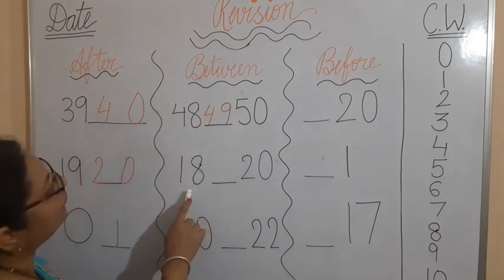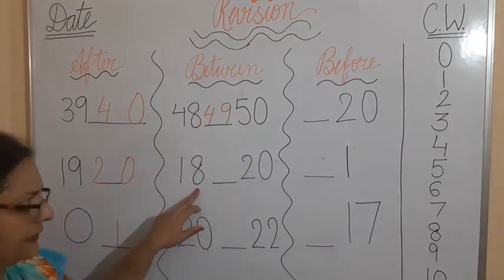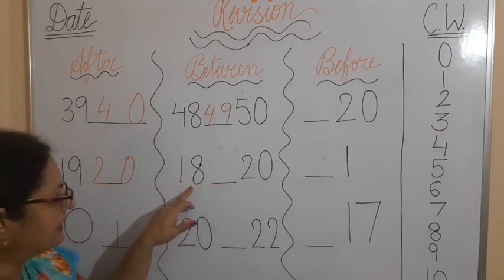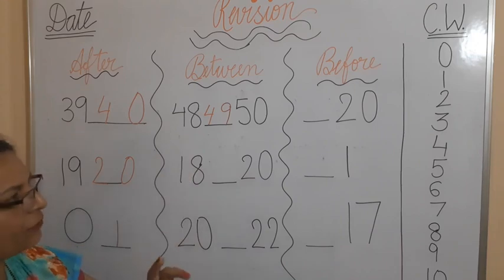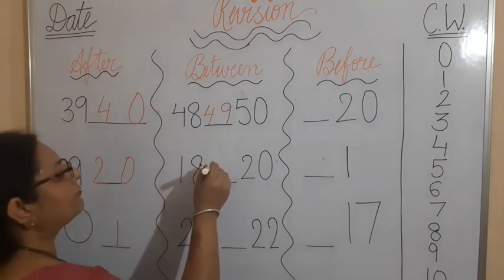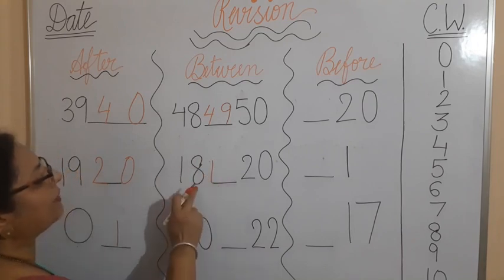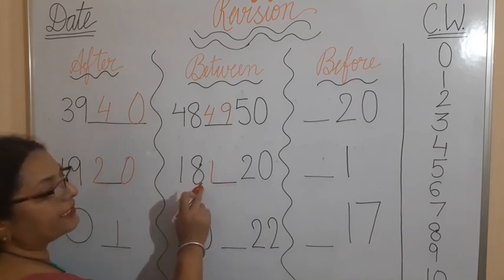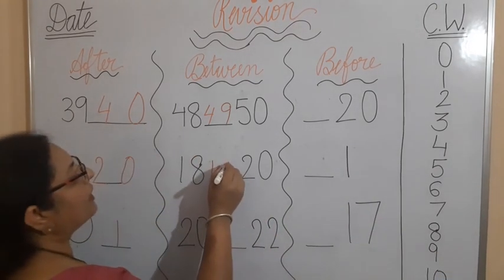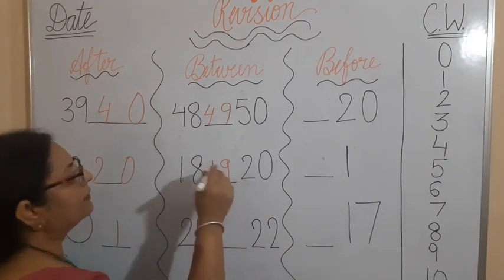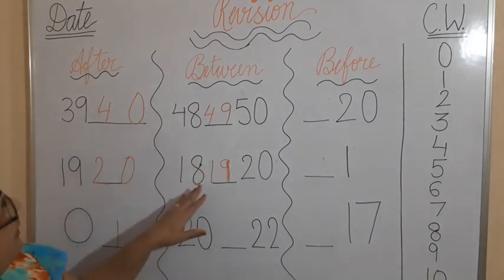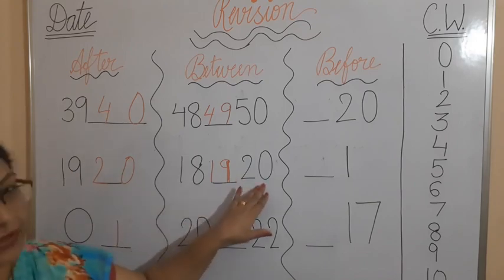Next, go for the next example: 18. What comes between 18 and 20? So what will you do here? First of all, your 1 will remain same here. And you have to see the second digit. Second digit is 8. What comes after 8? 9. You have to write 9. It becomes 19. So 19 is between 18 and 20.